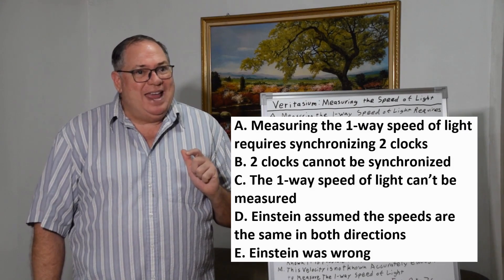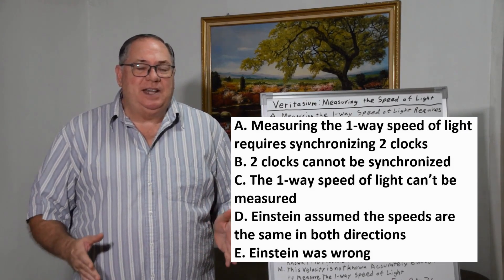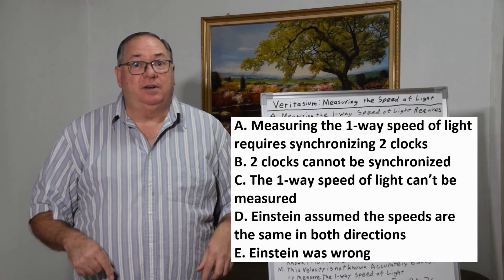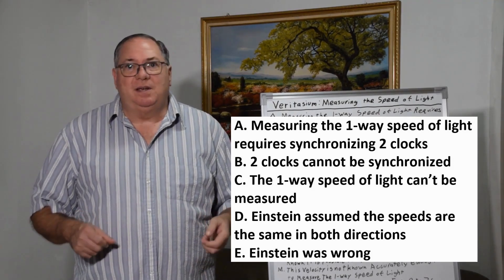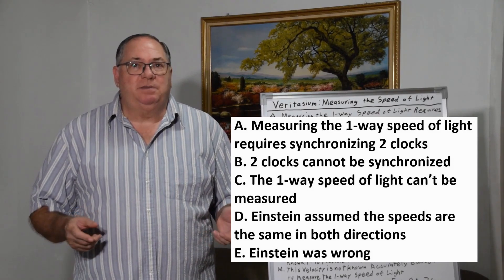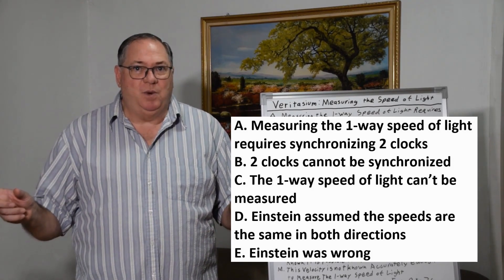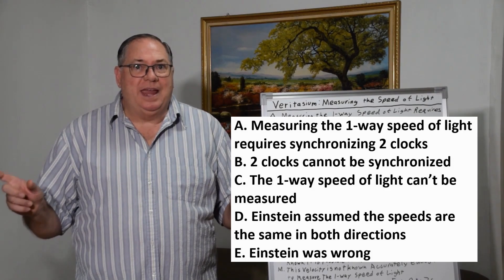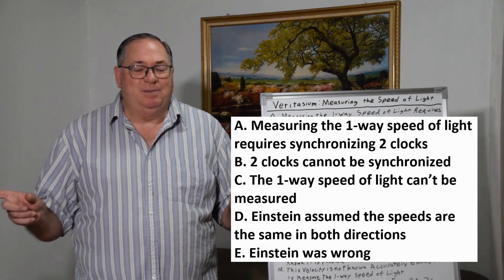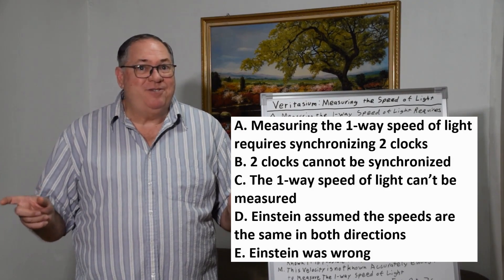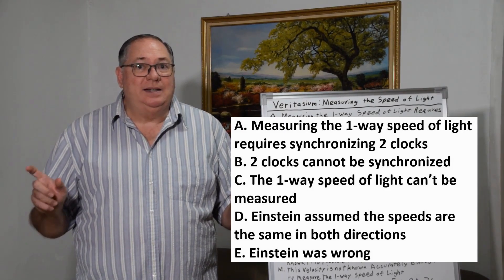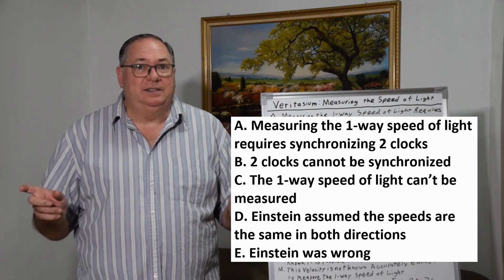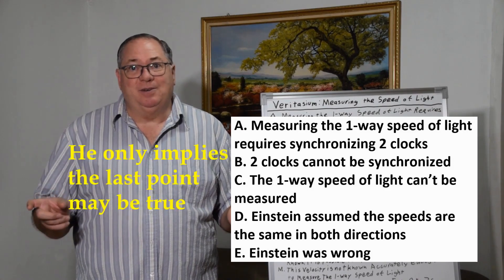If you're not familiar with the problem you might want to watch his video first. But in summary, in order to measure the speed of light you need to have two clocks at two points that are synchronized, but we can't synchronize two clocks at two points, so we can't measure the one-way speed of light. So Einstein just assumed that the speed of light is the same in both directions, and he assumed incorrectly.